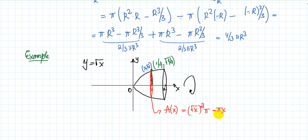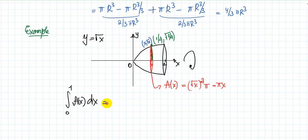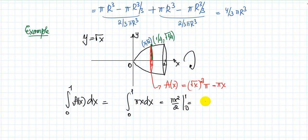Now what I need to do is integrate this area function A(x) dx. From where to where does x change? I can cut this from 0 to 1. So this will be the integral of pi·x dx from 0 to 1. This is pi·x²/2 evaluated from 0 to 1, which gives pi over 2. So the volume of this solid is equal to pi over 2.